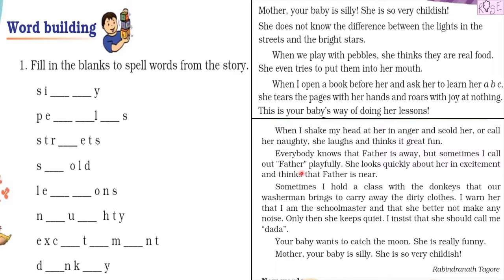'Everybody knows that father is away, but sometimes I call her father playfully. She looks quickly about her in excitement and thinks that father is near. Sometimes I hold a class with the donkeys that our washerman brings to carry the dirty clothes. I warn her that I am the schoolmaster and that she better not make any noise. Only then she keeps quiet. I insist that she should call me dada. Your baby wants to catch the moon. She is really funny. Mother, your baby is silly. She is so very childish.' This story was written by Rabindranath Tagore.